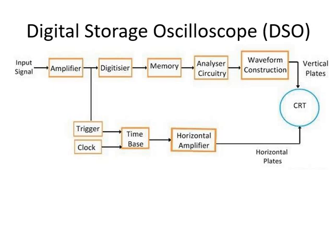The advantages of the DSO are: the digitized signal can be stored for a very long time; signal processing is possible; cursor measurement is possible; it is applicable for displaying XY plots, PV diagrams, BH curves, etc. We can also use USB connection with the digital storage oscilloscope, which is not available in the CRO (cathode ray oscilloscope). The DSO is essentially an updated version of the CRO with many advantages over it.